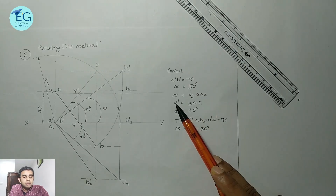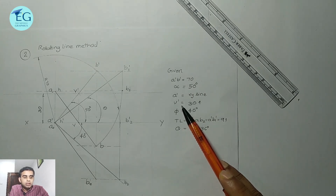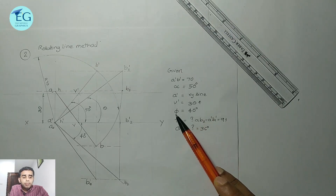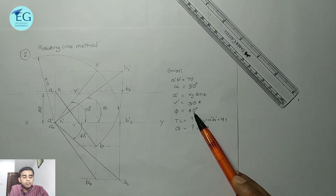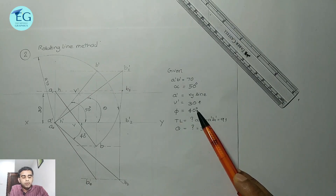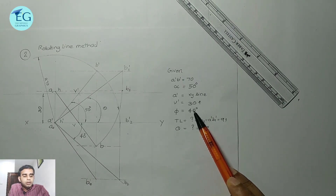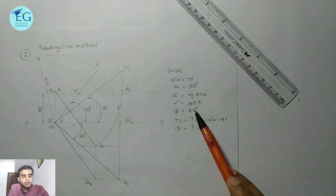The vertical trace of the top view is always on the XY line. That is, the horizontal trace of the front view is always on the XY line. The inclination of the line with VP is phi equal to 40 degrees, and theta equal to 40 degrees.